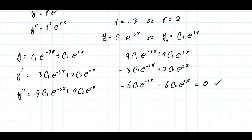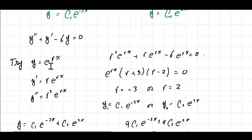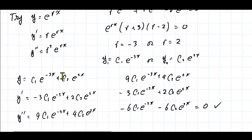Let's review. To solve this kind of differential equation: guess y = e^(rx), take the first and second derivatives, plug them all in, and you get an algebra problem — a characteristic equation. Solve that, and write the general solution as a combination of the two solutions with constants c₁ and c₂. We know from Calculus BC there's usually a constant.